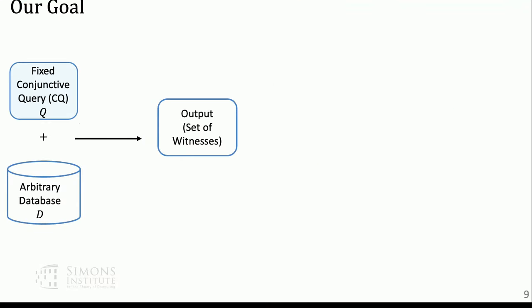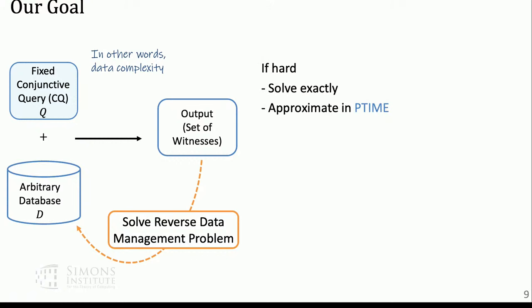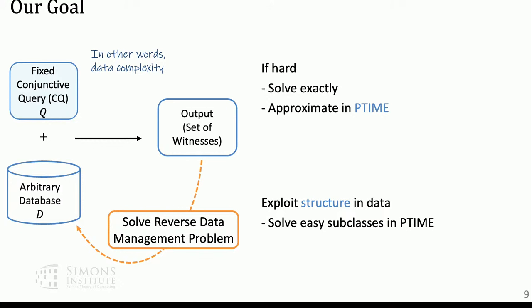You have all these different problems you'd like to solve. For some fixed query, given an arbitrary database you produce output, then run some reverse data management problem. When I say fixed query, I'm talking about data complexity. Maybe it's NP-complete, so the best you can do is solve it exactly in exponential time, or find approximations in P-time. Or you find structure in your query and solve easy sub-instances exactly in P-time, and find where the border is for different problems.